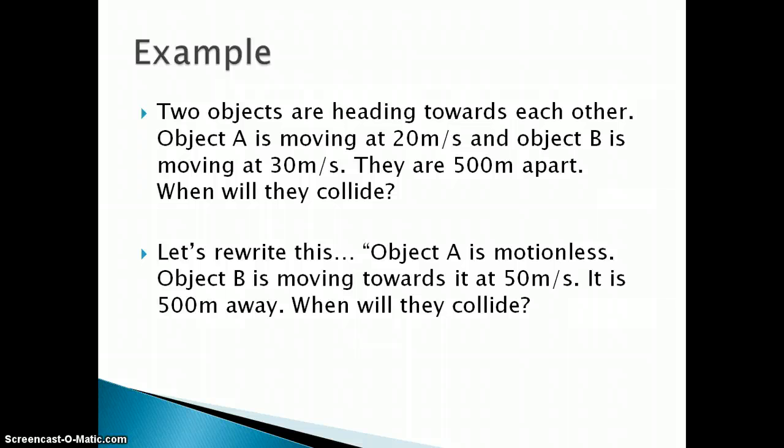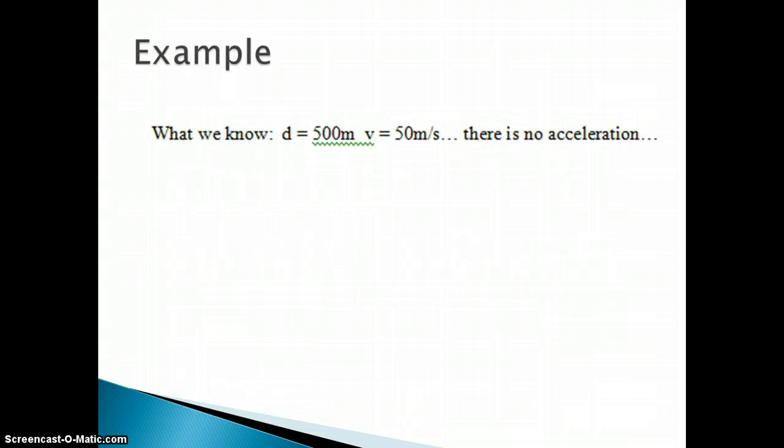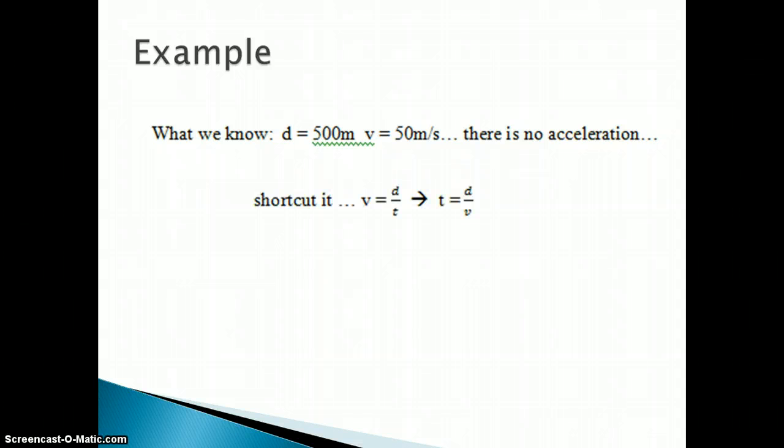Or we could say, we're going to rewrite this and say object A is motionless. Object B is moving towards it at 50 and it's now 500 meters away. When do they collide? Well, the distance is 500 meters. The velocity is 50 meters per second. There's no acceleration. We can use velocity as distance over time. We rewrite it and solve for time. Time is 10 seconds. So they will collide in 10 seconds.